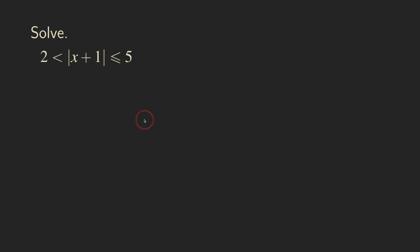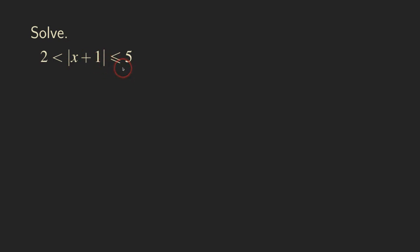Hello everyone, it's Wilson here. Today I want to talk about this three-part inequality with an absolute value in the middle part. You can see that there is the absolute value function here — absolute value of x plus 1 — that's between 2 and 5. Not equal to 2, but it can be equal to 5. And we want to find the set of x values that will satisfy this inequality.